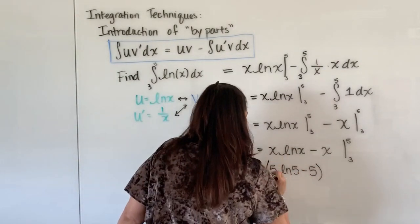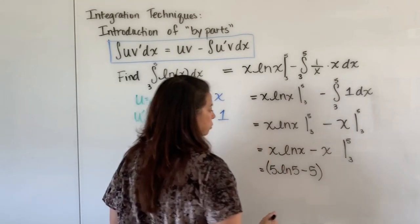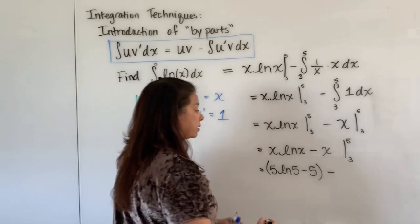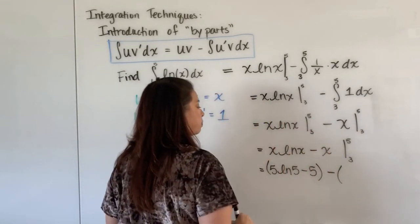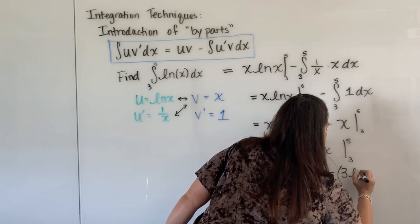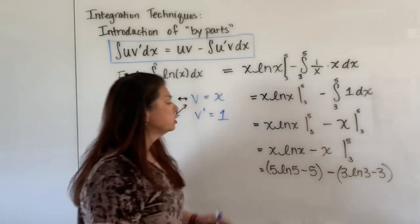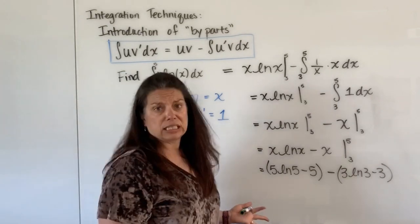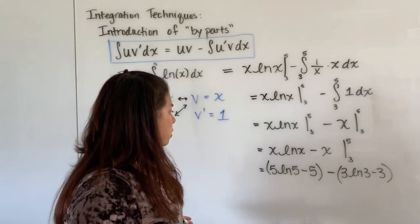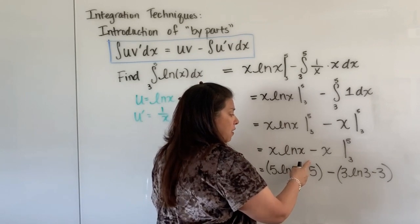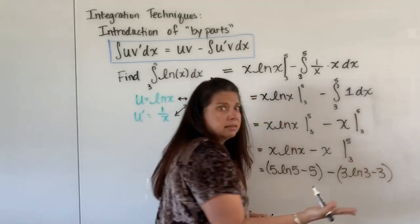And that's for the first boundary, the upper boundary. And now using the fundamental theorem of calculus, I would subtract off the next piece when I evaluate with my 3. So I have 3 natural log of 3 subtract 3. And so the answer left just like this is fine. The only thing you could clean up if you wanted to is maybe collect like terms between this negative 5 subtract and negative 3. That would be fine too.